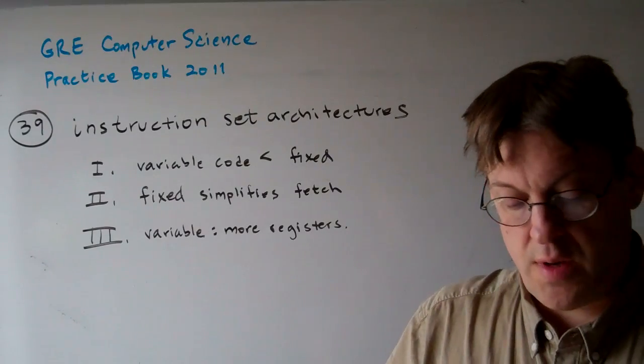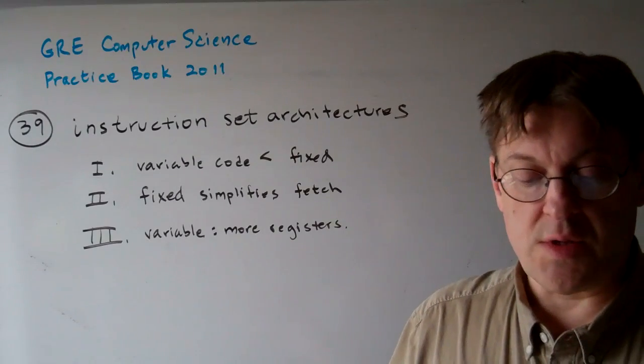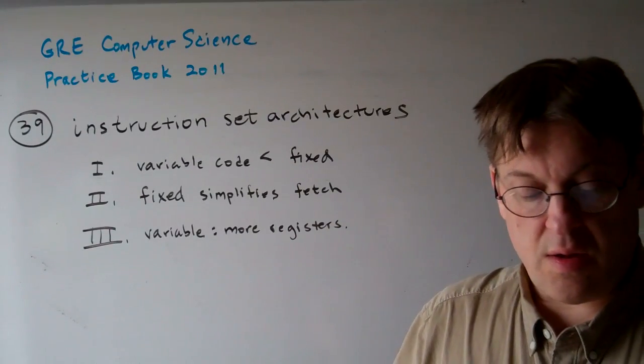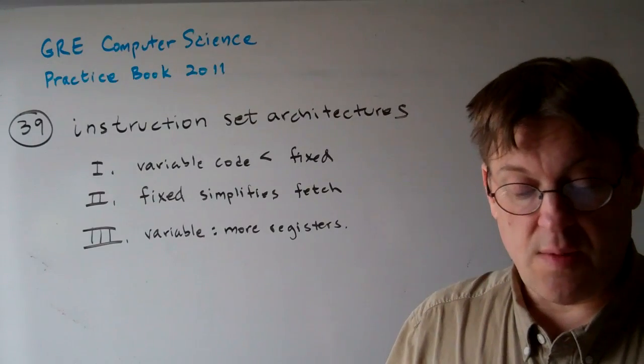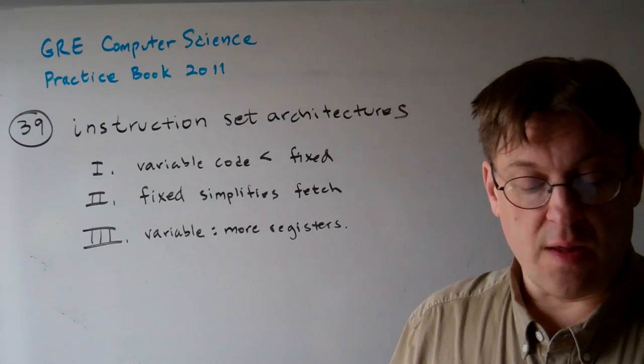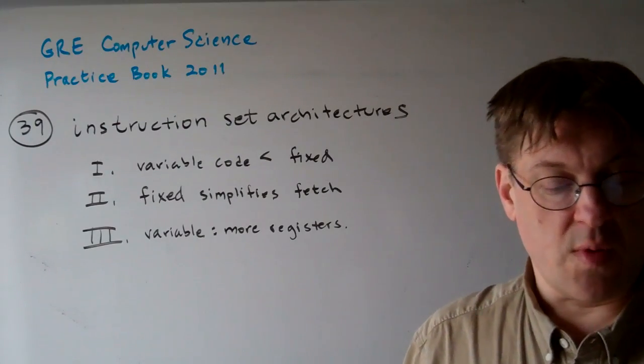And we have one, variable length instruction set architectures allow for smaller code size. Two, fixed length instruction set architectures simplify instruction fetch and decode. And three, variable length instruction set architectures require more registers than fixed ones.